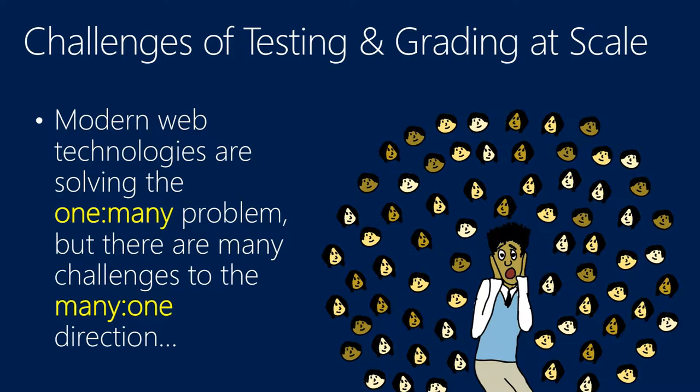Modern web technologies are extremely effective for the one-to-many direction, broadcasting lectures and classroom materials to thousands of students, but the many-to-one direction is far more challenging. Once you get beyond simple multiple-choice questions, getting answers or feedback from students at that scale can be overwhelming.